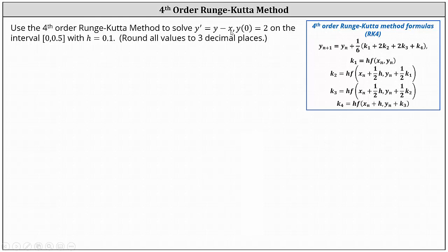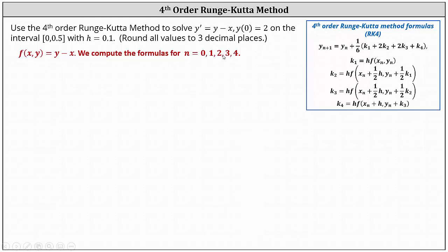Because y prime equals y minus x, we have f of x comma y equals y minus x. Because we have the interval from 0 to 0.5 and we're making approximations in increments of 0.1 given by h, we need to compute the formulas for n equals 0, 1, 2, 3, and 4. Because the initial condition is y of 0 equals 2, we know when n equals 0, x sub 0 equals 0 and y sub 0 equals 2.